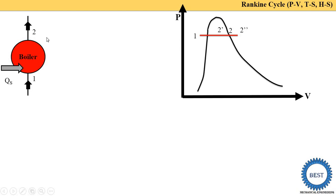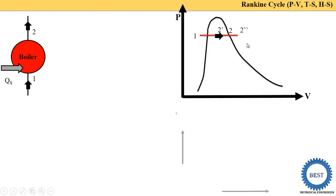At the outlet of the boiler there are three possibilities: wet steam, dry and saturated steam, or superheated steam. If wet steam comes out, point two is in the wet region. Dry and saturated means the steam is completely dry with no water particles — that point falls on the saturated vapor line. Superheated steam is indicated by the two-double-dash point, beyond the saturated vapor line.